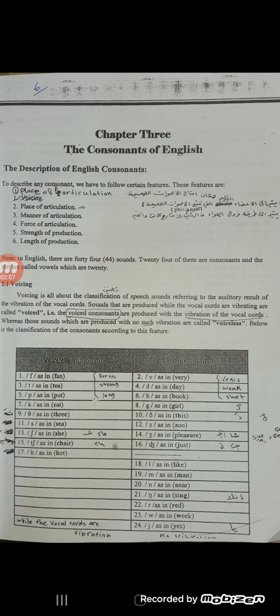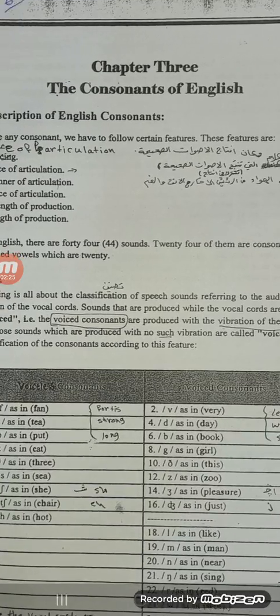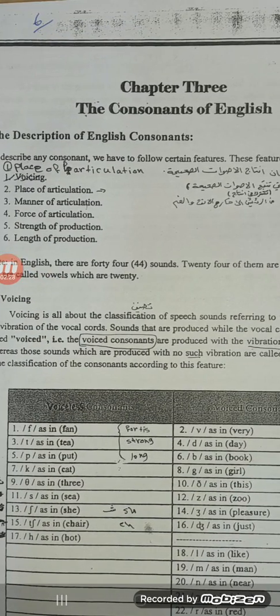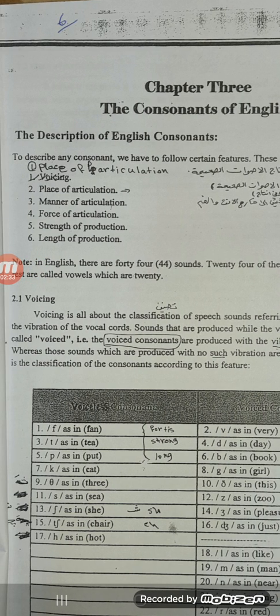We will talk also about the description of the English consonants, how can we describe the consonants. We can describe the consonants according to these features. We have, for example, number one, the consonants follow certain features according to the voicing.